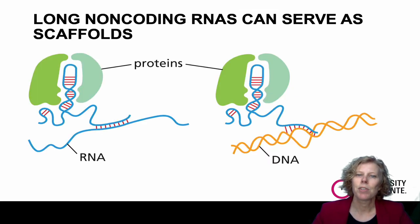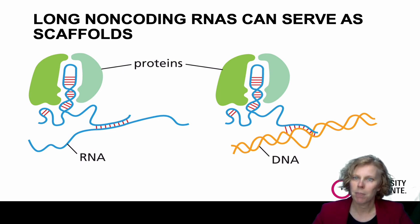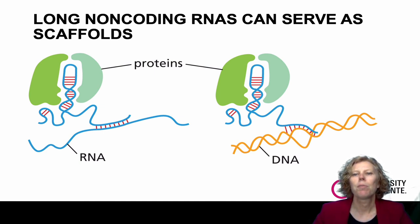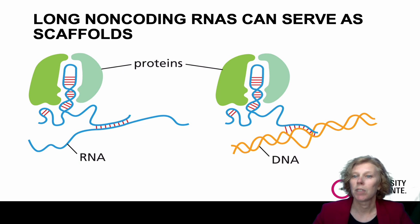Recently, thousands of long non-coding RNAs have been discovered. Long non-coding RNAs are a class of RNA molecules that are more than 200 nucleotides in length. There are expected to be over 5,000 of these long non-coding RNAs in the human and mouse genomes. The role of most of these long non-coding RNAs is still unclear. Long non-coding RNAs can serve as scaffolds, bringing together proteins that function in the same cell process.